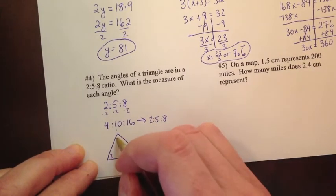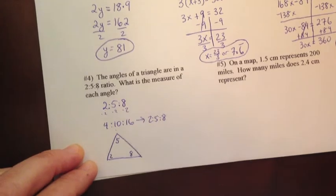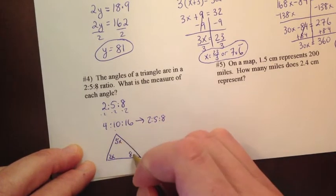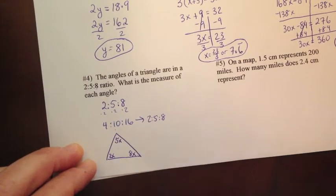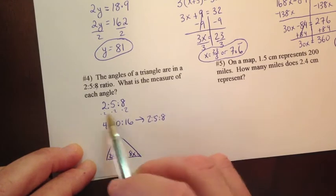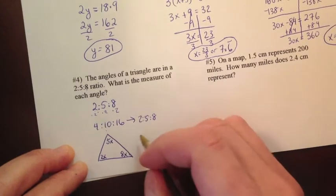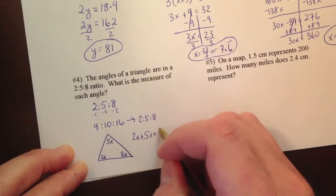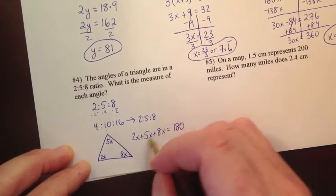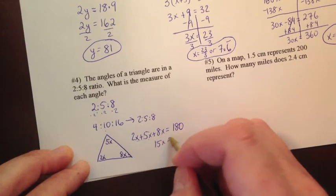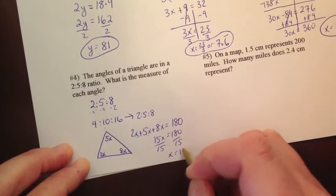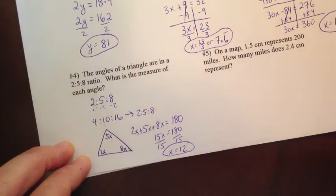Now, I know that the angles cannot be 2, 5, and 8. That doesn't add up to 180. But if I say 2x to 5x to 8x. Now, they all have the same x here. I could divide out the x, and I still have 2 to 5 to 8. So what I can do is add these up. 2x plus 5x plus 8x. They add up to 180. We get 7 plus 8 is 15x equals 180. Divide by 15. x is 12. We've got 12 again.